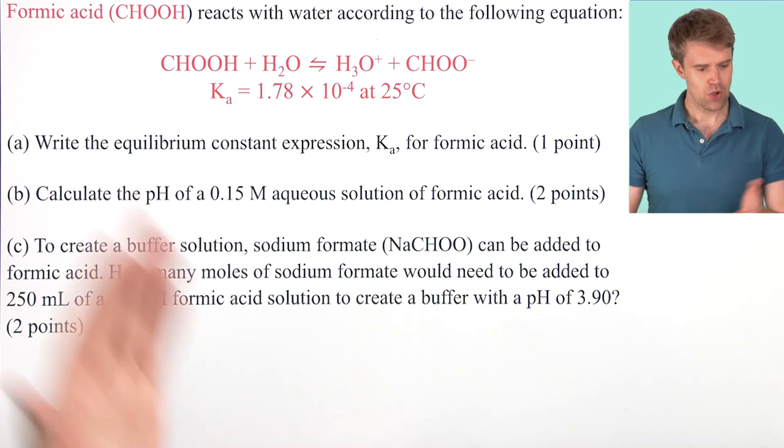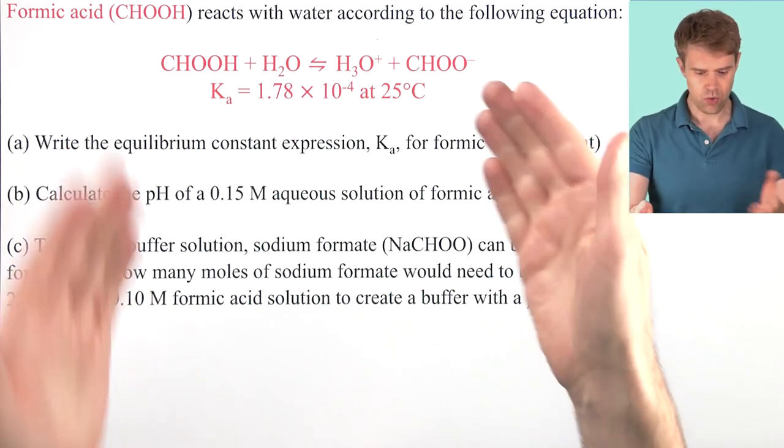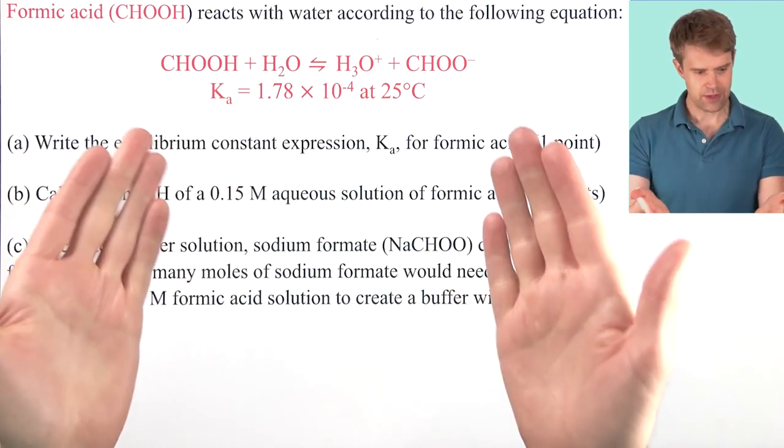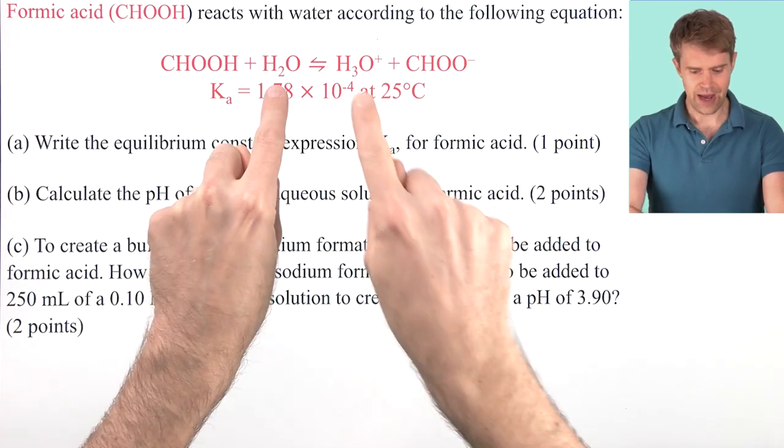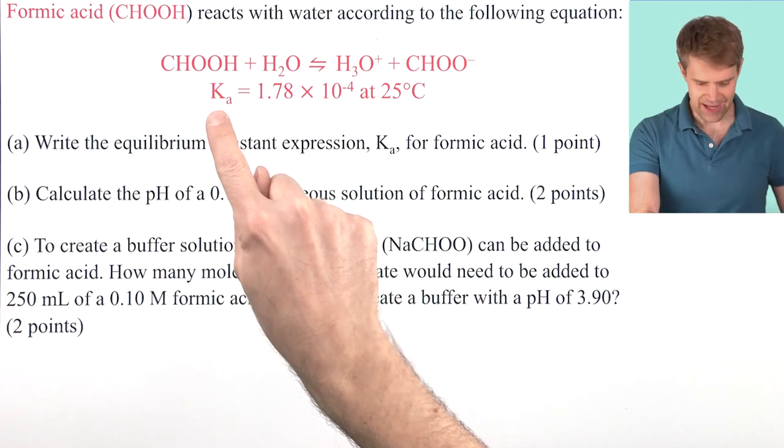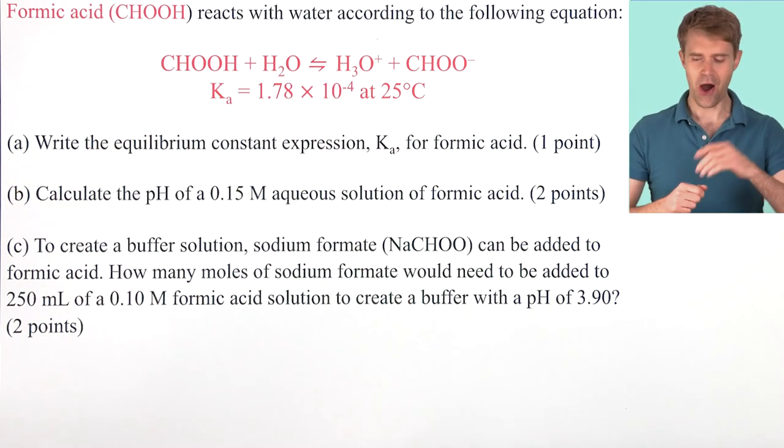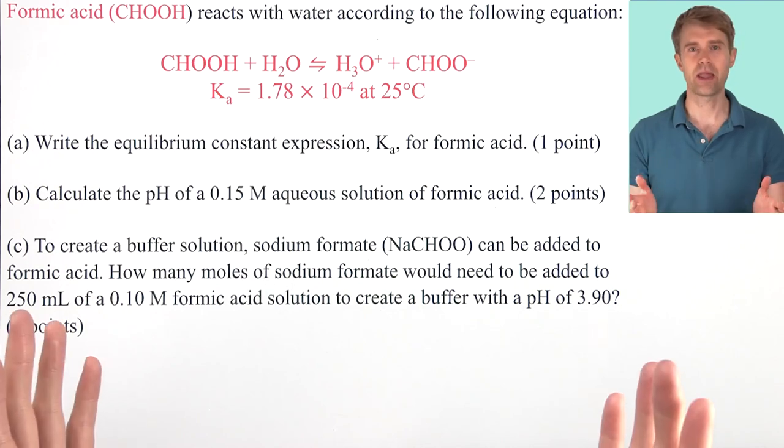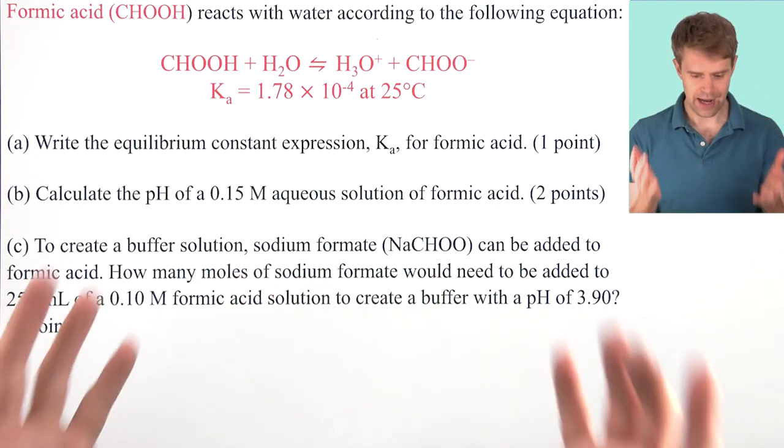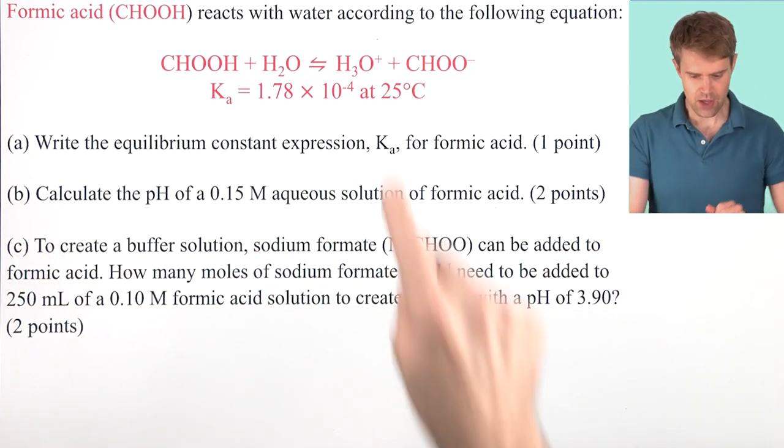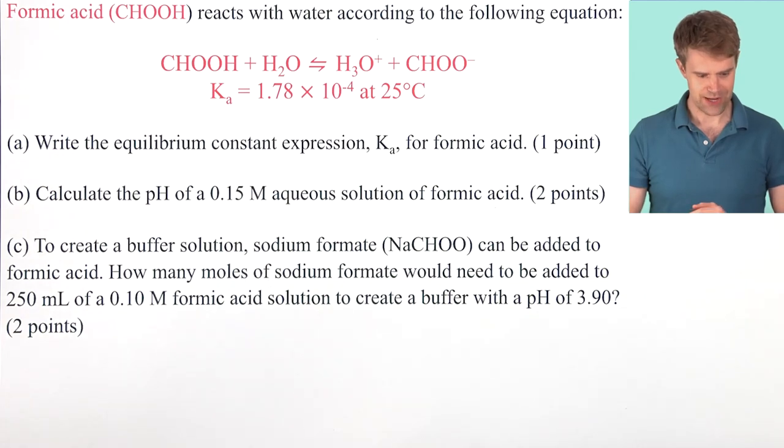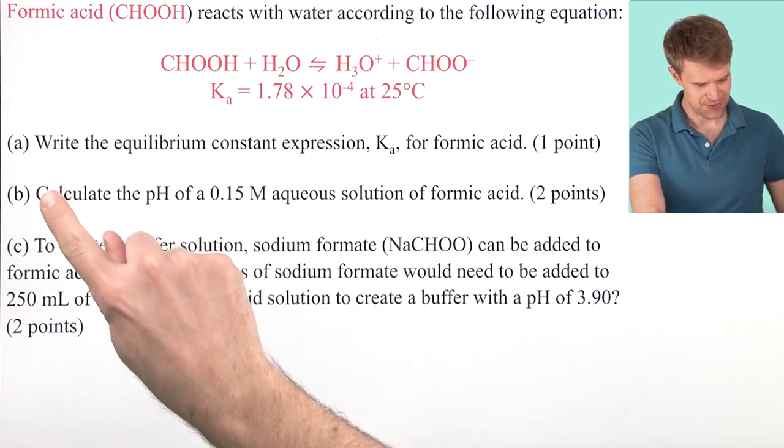Let's get started. Formic acid reacts with water according to the following equation. This is formic acid and the equation gives us the reaction for the ionization of formic acid in water and we get the Ka or acid dissociation constant of formic acid. Now we know that formic acid is a weak acid because it doesn't fully ionize. Instead, the products and the reactants are in equilibrium with each other. There are three parts to this question.